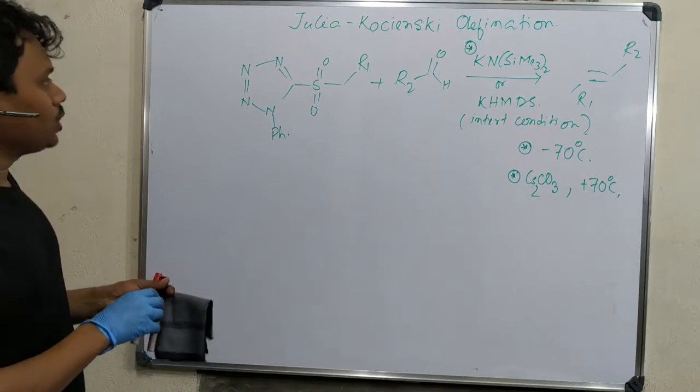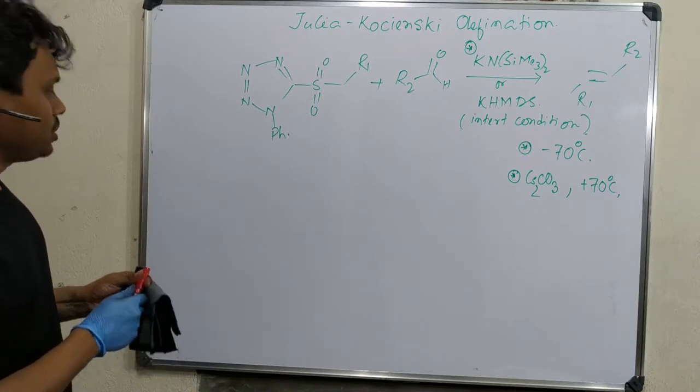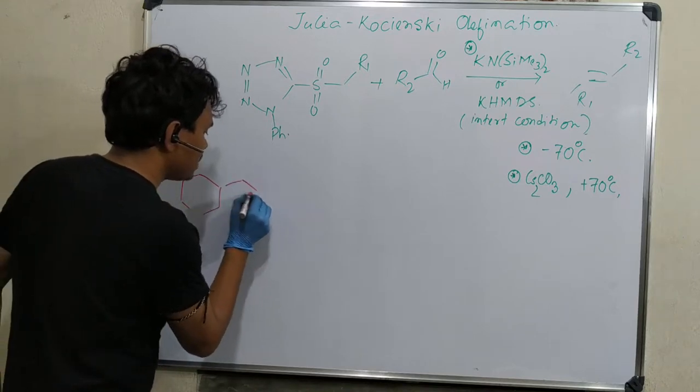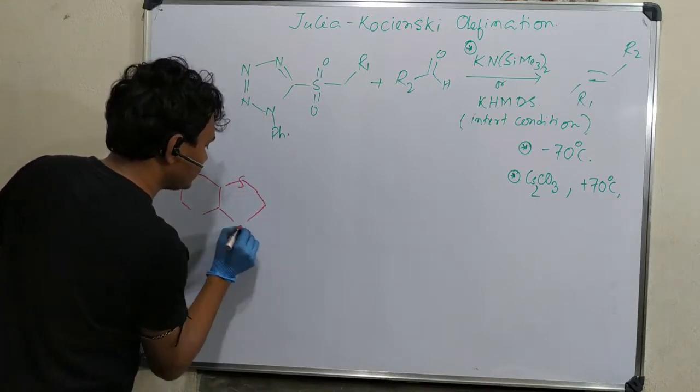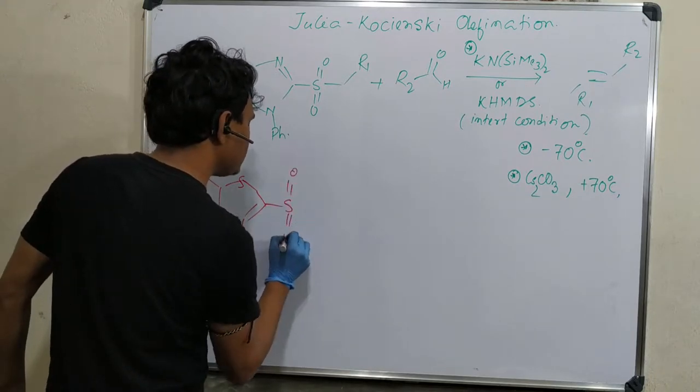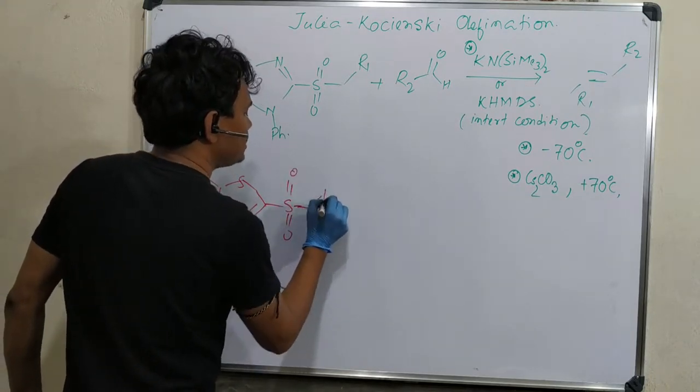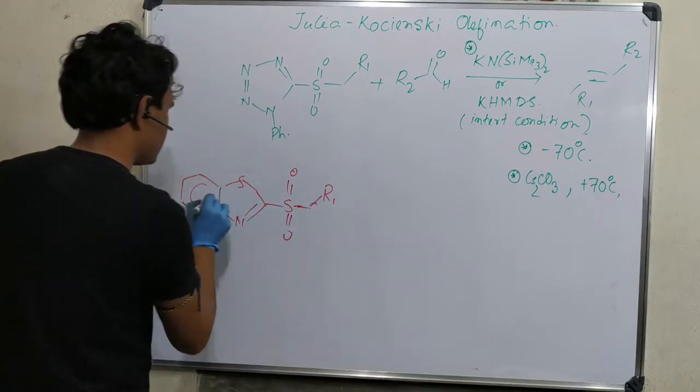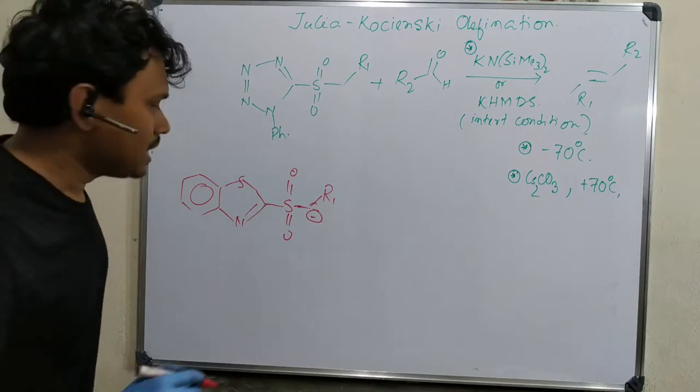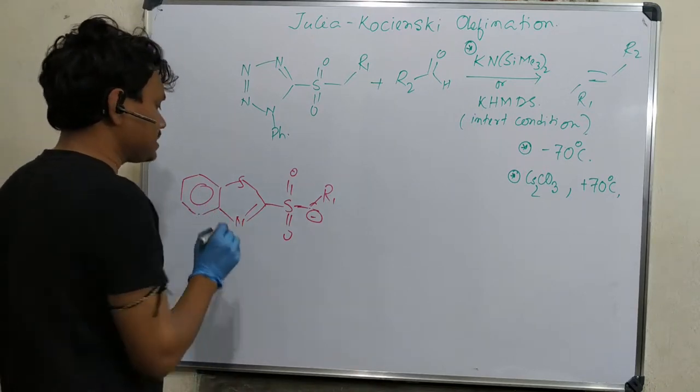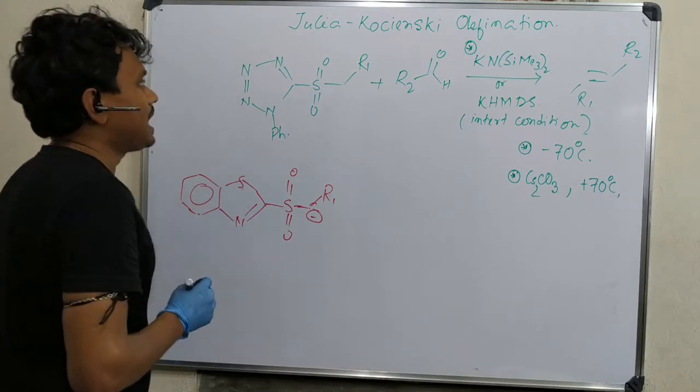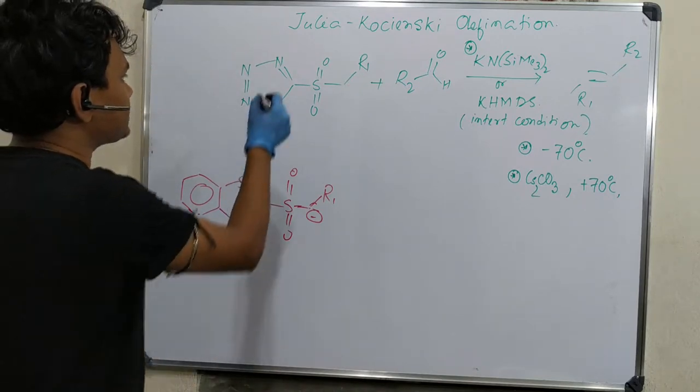The main thing in case of Julia olefination - let me tell you one part, it will be useful - there sulfons are used, and an anion is generated that carries out the reaction. Instead of that, it's a sulfathiazole five-member ring. Here the reaction is carried out in presence of a tetrazole unit.